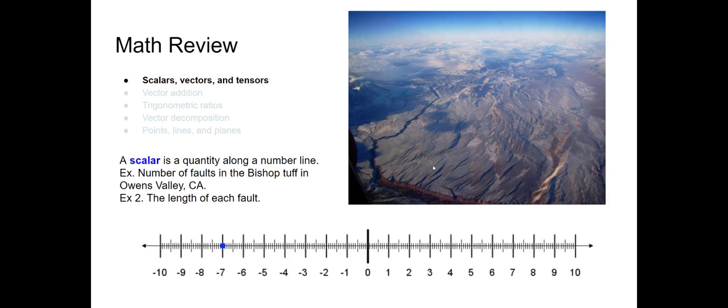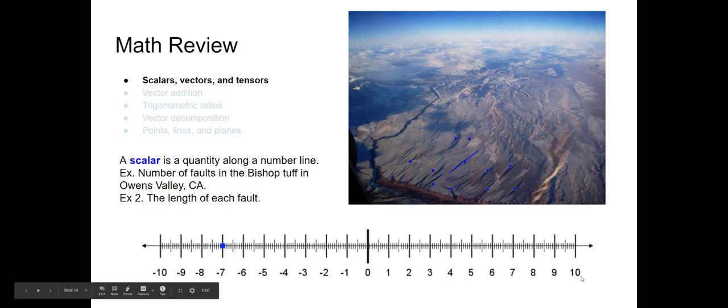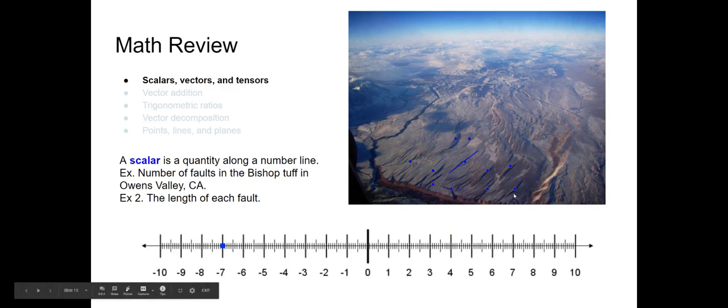All of those features that look like shadows in the shape of lines are faults — breaks in the Bishop Tuff where there's been some displacement, some sliding of the rock on both sides. If we counted the number of faults and said there are 2,000 faults in the Bishop Tuff, that's a scalar. The length of a fault — say we measured one at two kilometers long — that length is also a scalar. Note that a scalar can still have units.